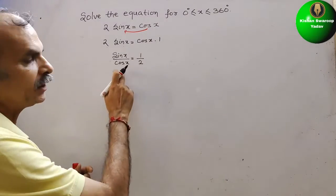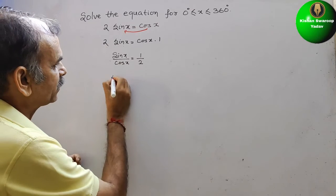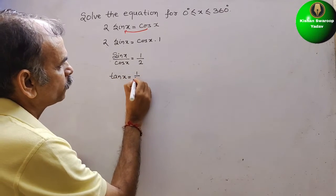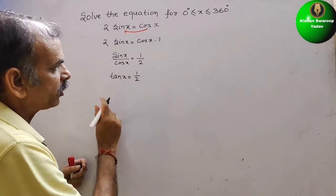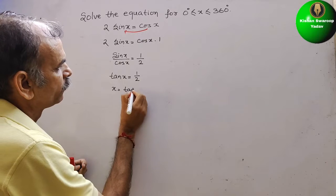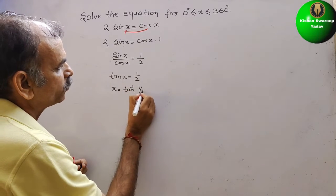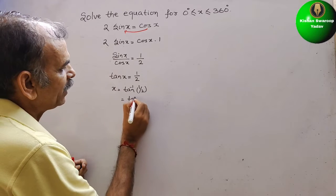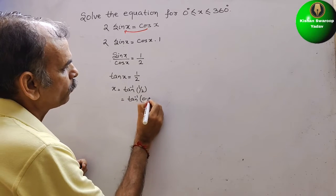Sin by cos is tan. So now we can say tan x is equal to 1 by 2. So what is your x? X is tan inverse of 1 by 2, that is equal to tan inverse of 0.5.